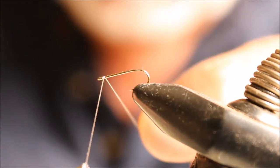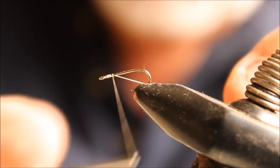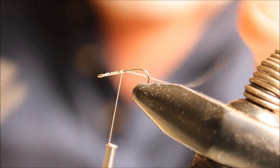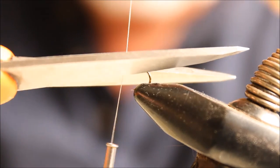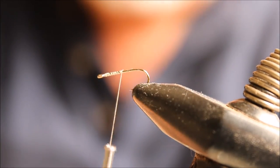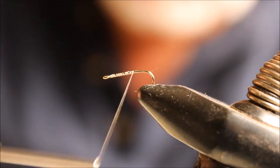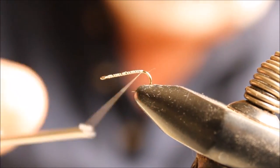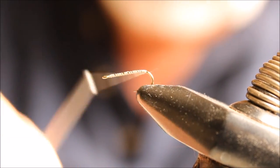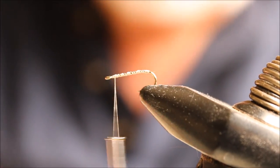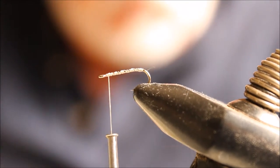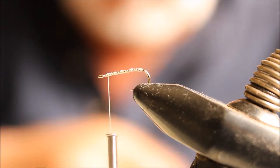The next fly up is a scud. A scud is a really good, effective fly here in New Mexico, and I've used it in a lot of places. If you look at a scud, if you think about a cross between a roly-poly and a shrimp, you get what a scud would look like.